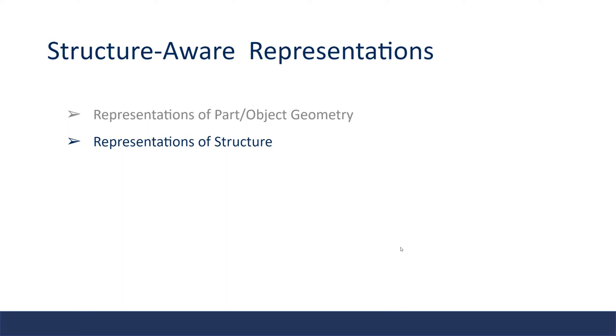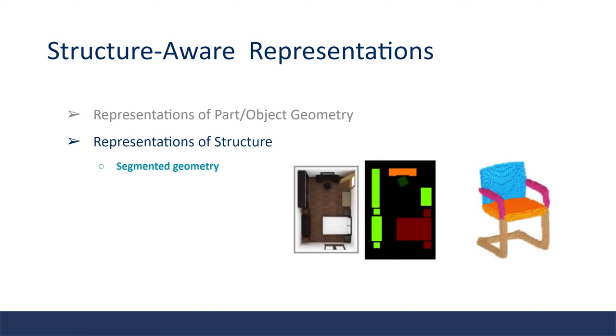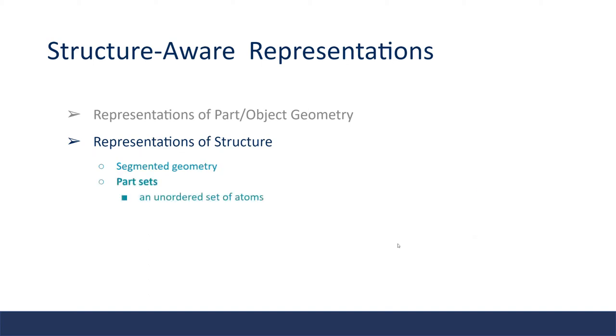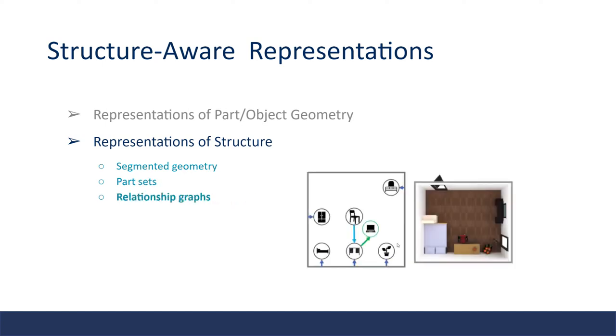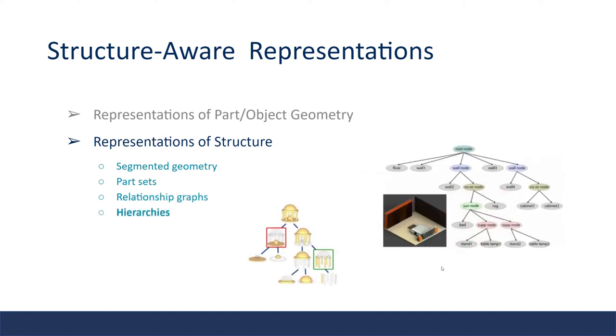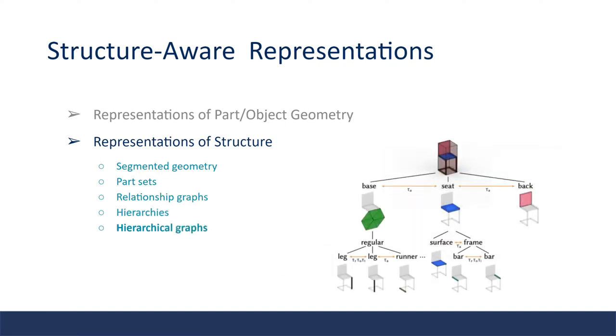There are also many ways to represent 3D structures as compositions of atomic parts. These representations include segmented geometry, which links labels to each part of the entity's geometry, and part sets, which is basically an ordered set of atoms, and relationship graphs with edges between different parts, and hierarchies, or sometimes we call them trees. And by combining relationship graphs and hierarchies, we can have hierarchical graphs.